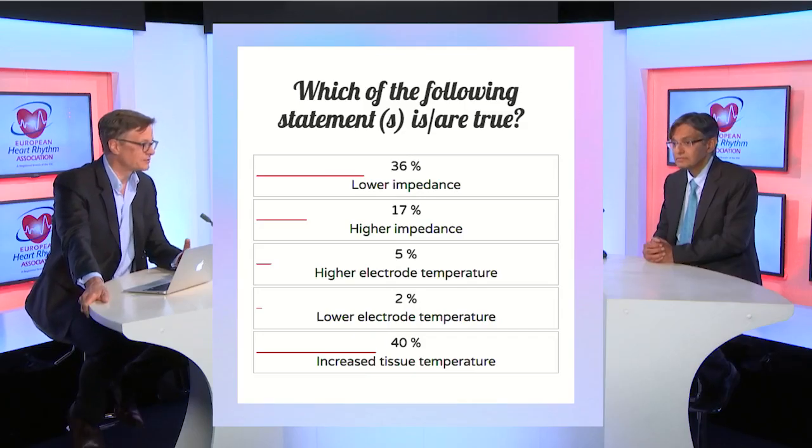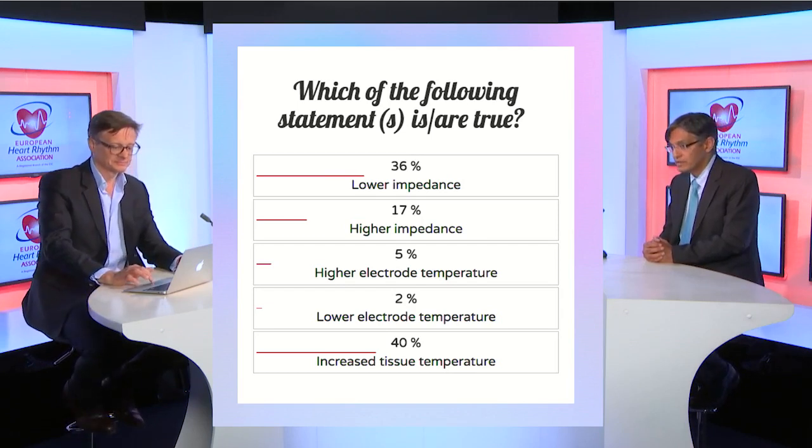The audience answers were neck and neck between lower impedance and increased tissue temperature. What actually happens with increasing contact force is that the electrode tip gets buried into the soft tissue, reducing the amount of electrode surface exposed to the surrounding high-conductivity blood. This is the mechanism by which impedance measured from the tip electrode increases — so you get higher impedance, not lower. Electrode temperatures depend upon the presence or absence of irrigation and RF delivery. Increased tissue temperature must occur with RF delivery, and that is the mechanism of RF lesion creation.